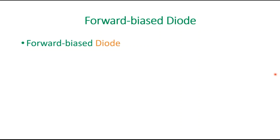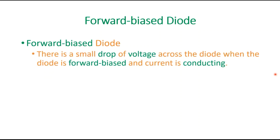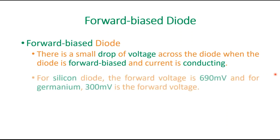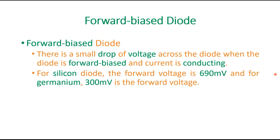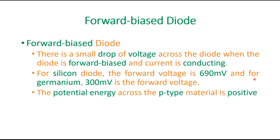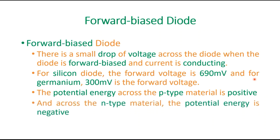In a forward biased diode, there is a small drop of voltage across the diode when it is forward biased and current is conducting. There are two types of semiconductors used — silicon and germanium. For the silicon diode the forward voltage is limited to 690 millivolts, and for germanium it is 300 millivolts. The potential energy across the p-type material is positive, whereas for the n-type material the potential energy is negative.